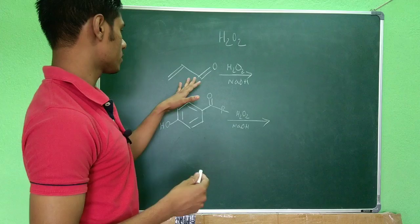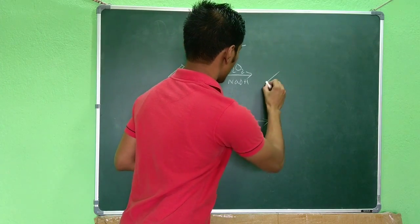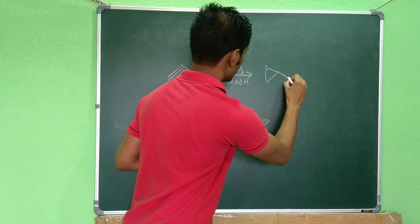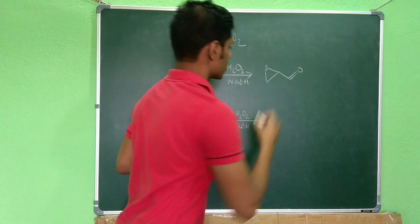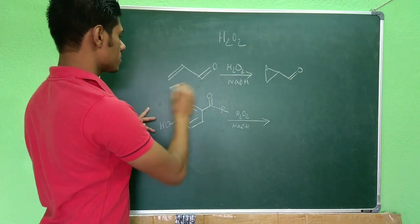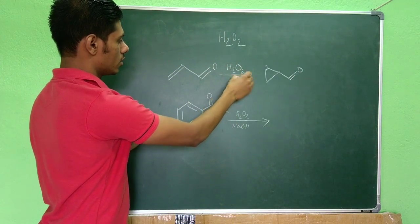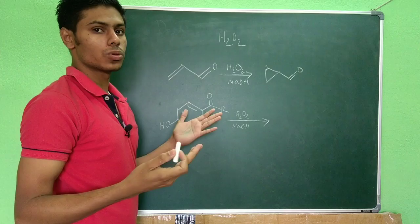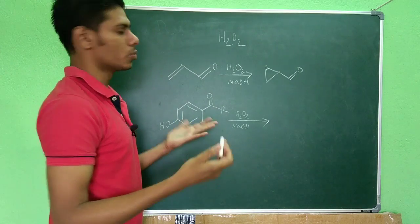So first I will briefly discuss the first reaction and you know that it will be converted to this epoxide. What is the mechanism? The mechanism is very simple. In NaOH solution, the H2O2 is converted to H2O2 minus.